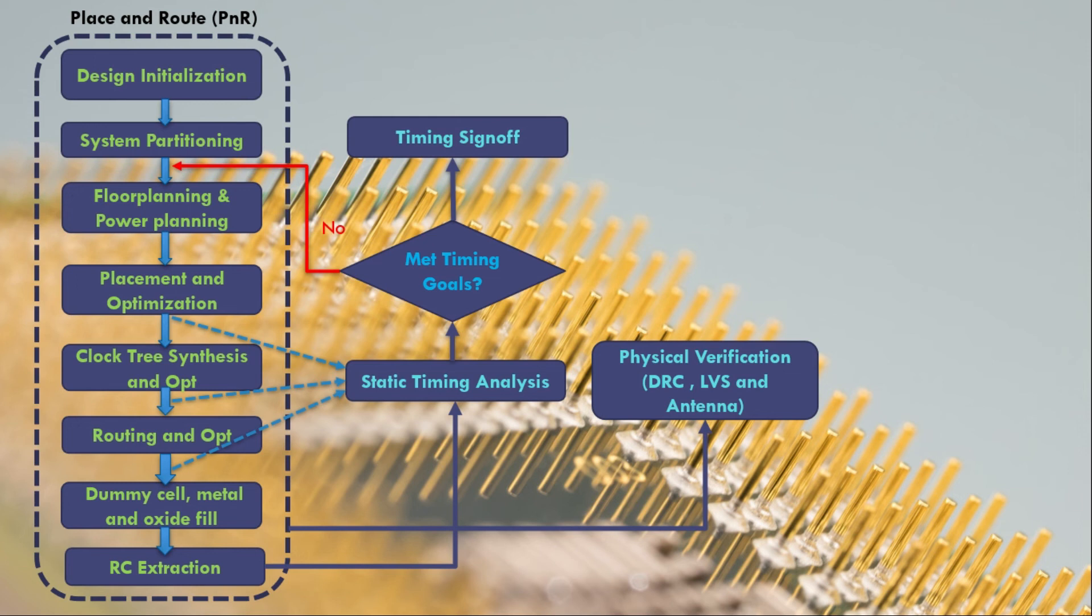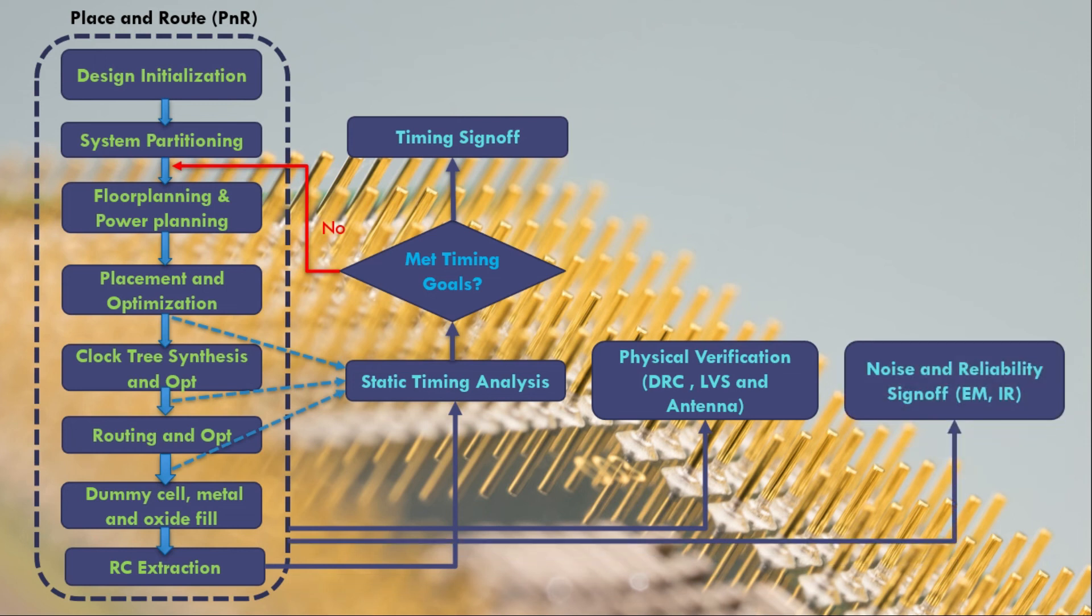And if there are some changes required because of this physical verification has some issues, those will be sent again back to the P&R stage. Need to make changes in those things and make sure that the timing hasn't been changed. Also in parallel with these two, the STA and the physical verification,